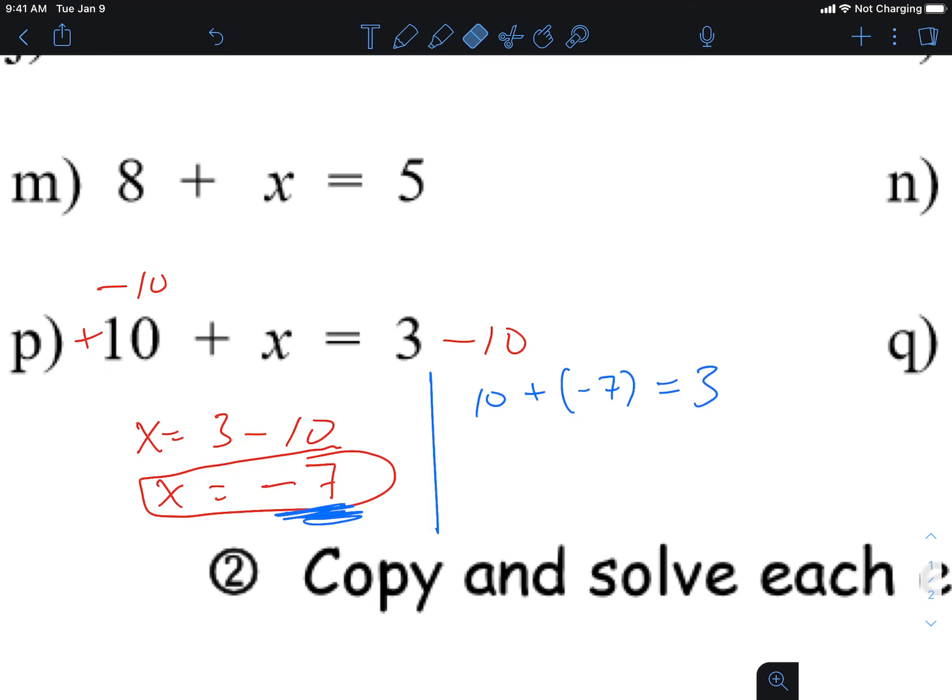What's 10 plus negative 7? Do we know what that is? What did we say about the negative? It always kind of dominates the positive, right? So essentially what this is is 10 minus 7. What's 10 minus 7? So we're right.